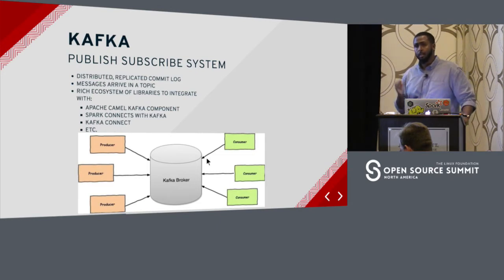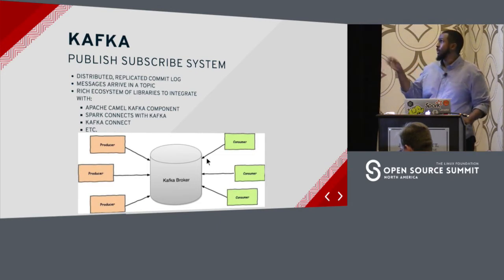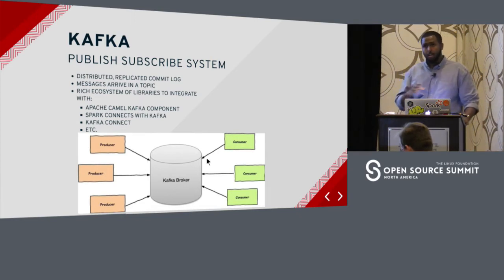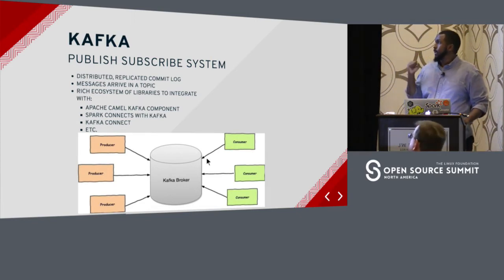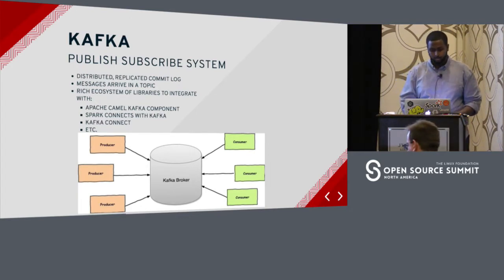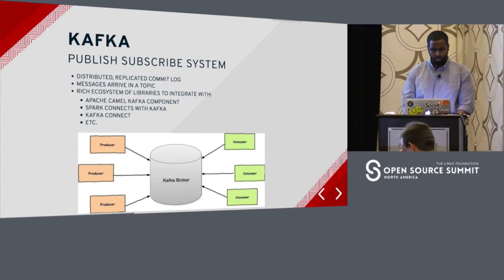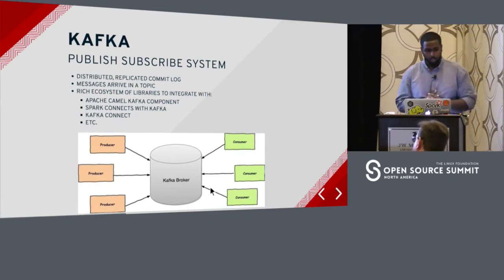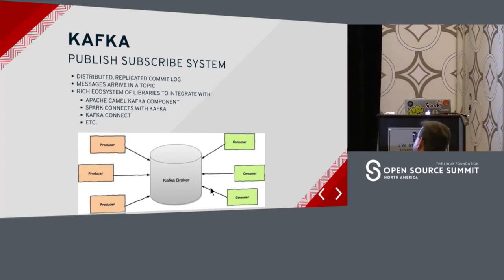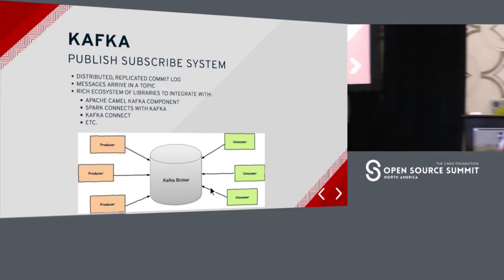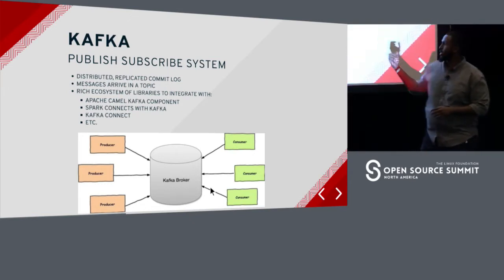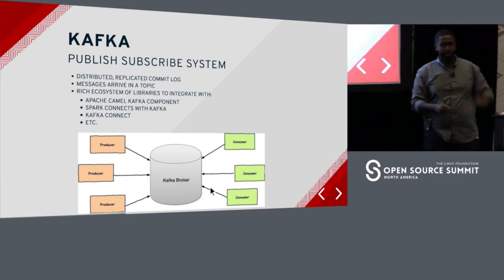Kafka uses ZooKeeper for high availability, and messages arrive in what's called a topic. Once a message arrives at a topic, the producer sends the message, it arrives in Kafka, and when the message gets received, the consumer picks up that message and does other processing.